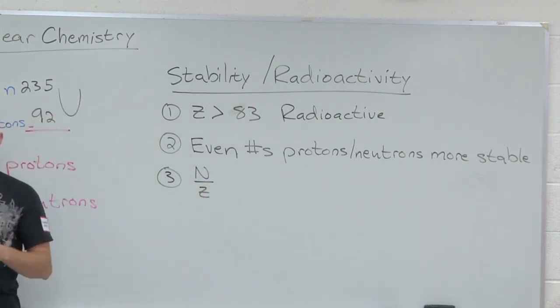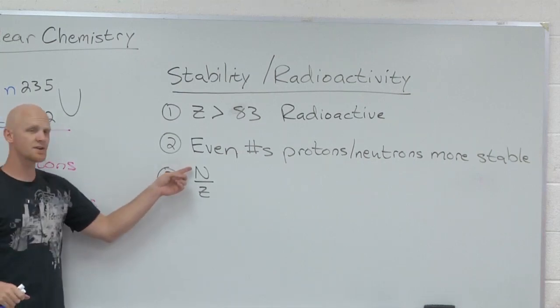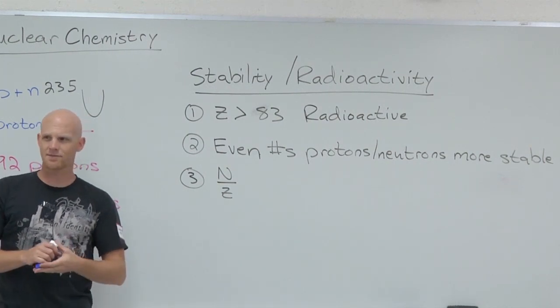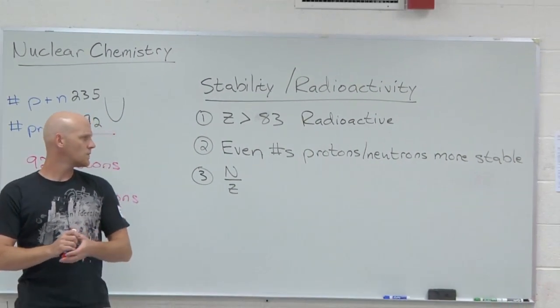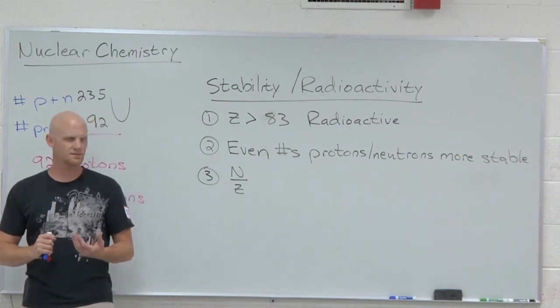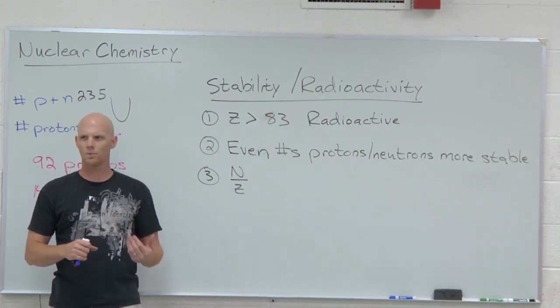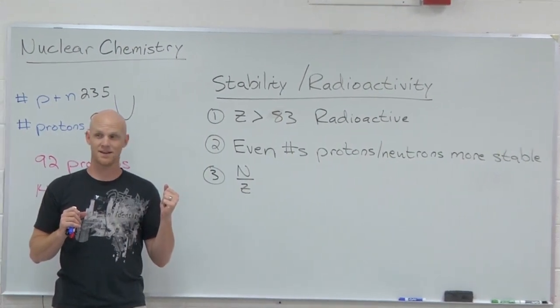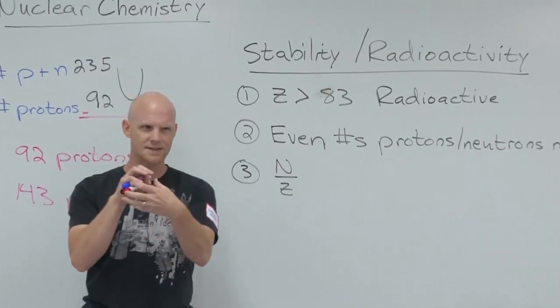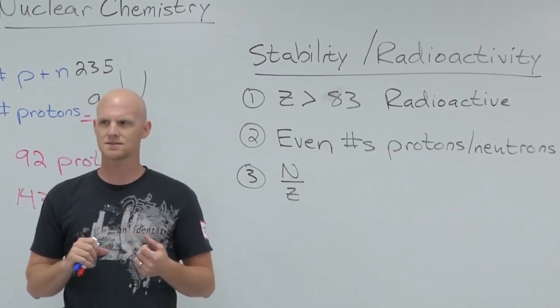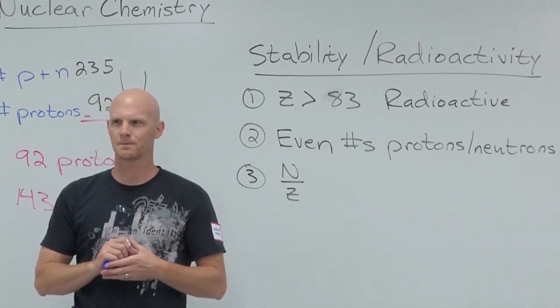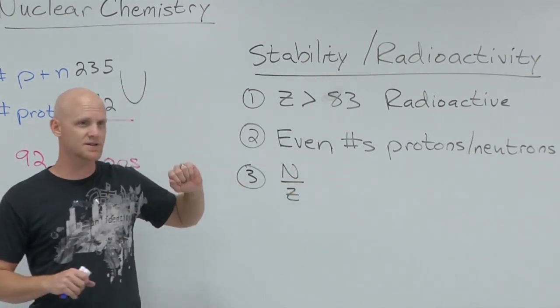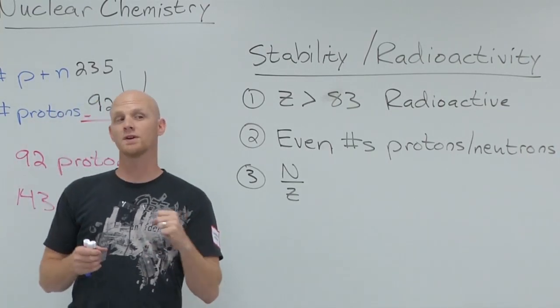Last thing we'll talk about is what we call an N over Z ratio. Here N stands for the number of neutrons, Z stands for the number of protons. So if you look at a nucleus, a nucleus is kind of a funky thing. You might wonder why does a nucleus stay together anyways? Because you've got a whole bunch of protons in the nucleus and how do protons feel about each other? They don't like each other. So why are they hanging out together in this nucleus in a really tiny confined space? What actually holds the nucleus together?